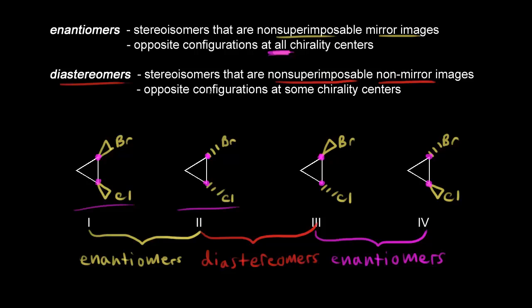Diastereomers have opposite configurations at some chirality centers. Looking at this carbon: bromine is on a dash in two and on a wedge in three — that's opposite. But looking at the chlorine carbon: chlorine is on a dash in both — that's the same. So we only have an opposite configuration at one chiral center, which is why these are diastereomers.